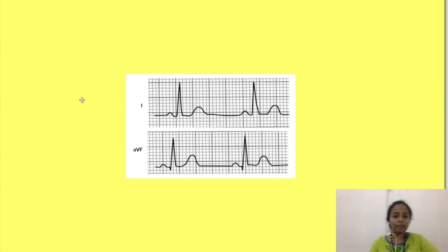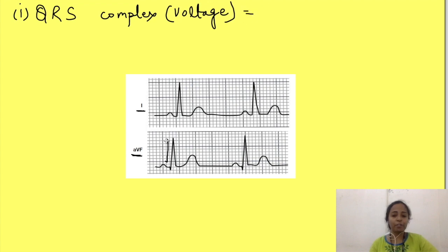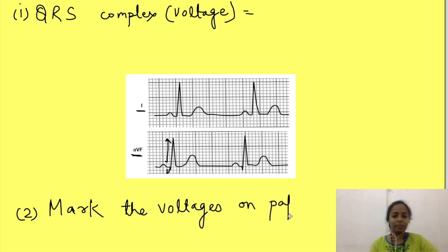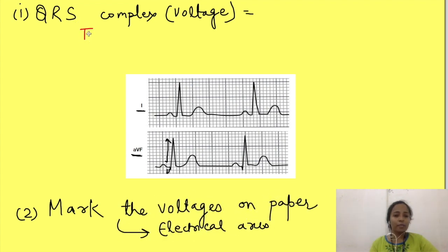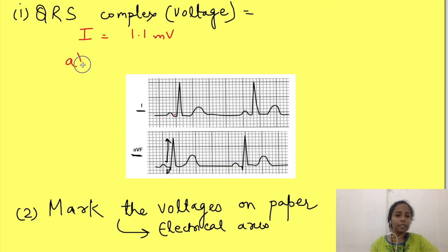In this diagram, we have the ECGs of lead 1 and lead AVF, and we have to find out the electrical axis of the heart. We will calculate the voltage of the QRS complex in these leads by subtracting the amplitude of the R wave with the most negative wave, which can be either the Q wave or the S wave. In lead 1, the amplitude of the QRS complex — counting the R wave and subtracting the Q wave — there is no negative wave, so the amplitude is 1.1 millivolts. Similarly, in lead AVF it is 0.9 millivolts.